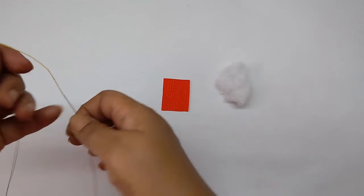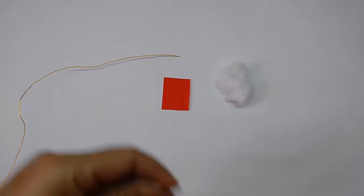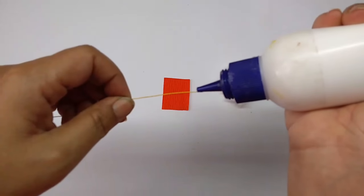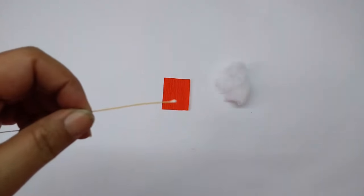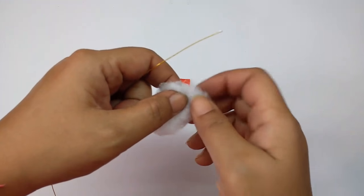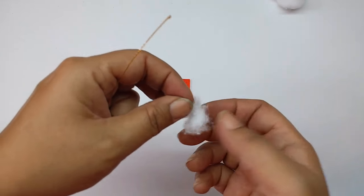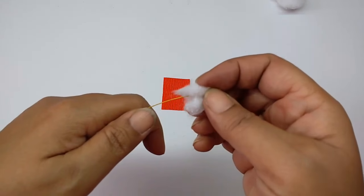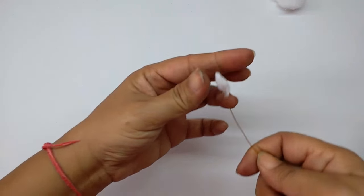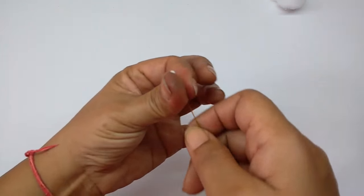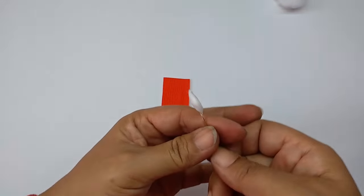Take the thin wire. First apply some glue on the top of the wire, and then take some cotton wool, a little bit, and put this on top of the wire. Make it a slightly longer shape by rolling it like this.